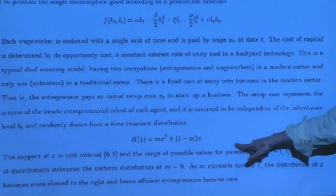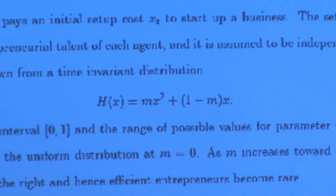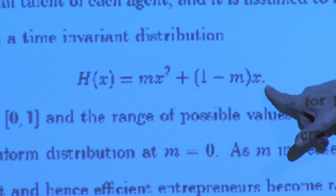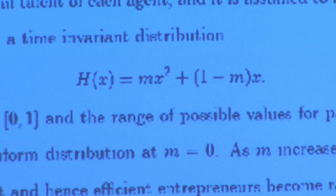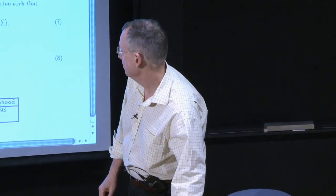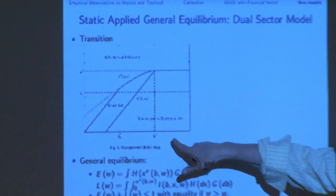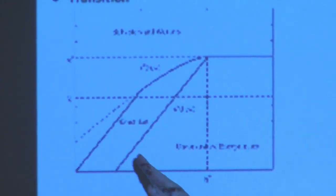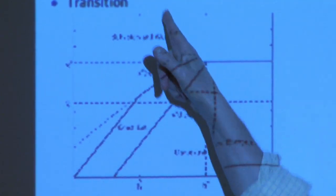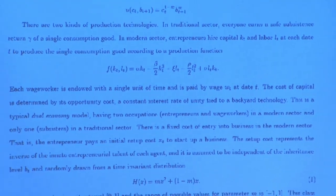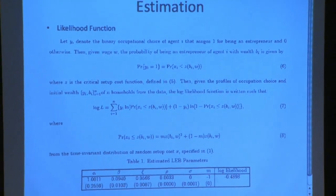This is the distribution of setup costs — the cumulative distribution. If m equals 0, the cumulative distribution just rises linearly in x, meaning the density is flat — a standard uniform distribution. If m is more than 0, you get the squared term, meaning the distribution of cost is skewed to the right, so there are some very untalented people. And conversely when m is below 0.